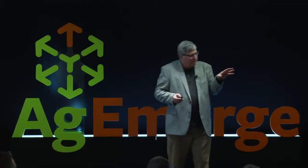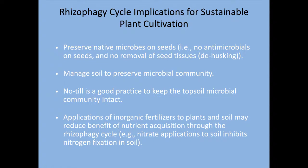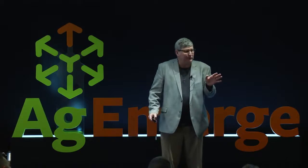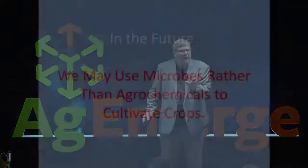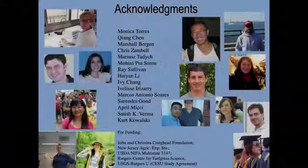To summarize: these endophytes and the rhizophagy cycle have ramifications for agriculture. No-till is better because you don't disturb that microbial community. Organics in the soil is better. Because these are seed-transmitted, you don't want sterilized seeds or seed treatments that remove the microbes. You want to preserve those microbes. And in the future, based on the work that many people are doing, we might be able to use microbes to manage crops without agrochemicals. Thank you very much.